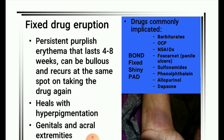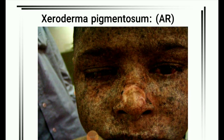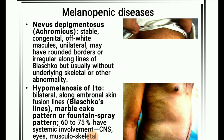Next image: Fixed drug eruption — persistent purplish erythema that lasts four to eight weeks, can be bullous, and recurs at the same spot on taking the drug again. Heals with hyperpigmentation. Affects genitals and acral extremities. Drugs commonly implicated: barbiturates, OCPs, NSAIDs, foscarnet causing penile ulcers, sulfonamides, phenolphthalein, allopurinol, and dapsone.